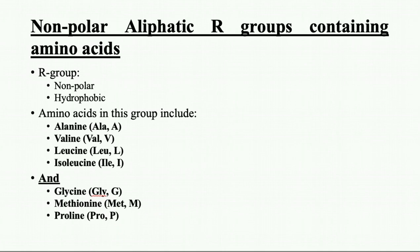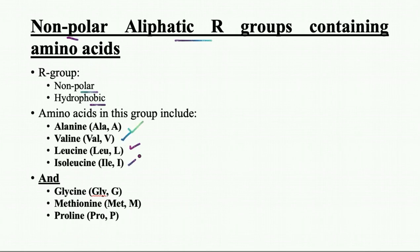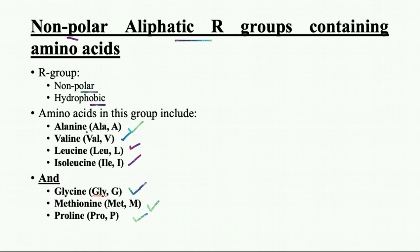The first class consists of non-polar aliphatic R group-containing amino acids. The R group in these amino acids is non-polar and hydrophobic in nature. Amino acids in this group include alanine, valine, leucine, and isoleucine. A separate sub-class includes glycine, methionine, and proline, whose R groups are also non-polar aliphatic but structurally different.